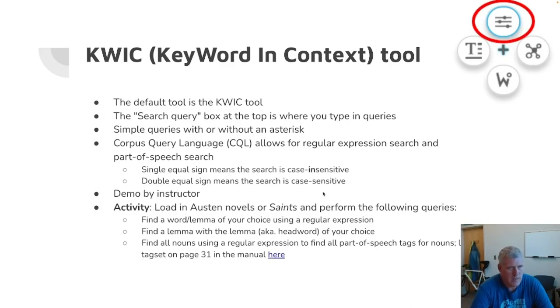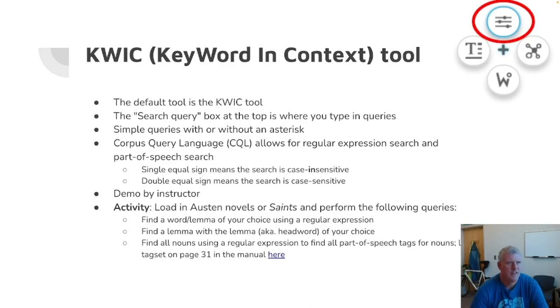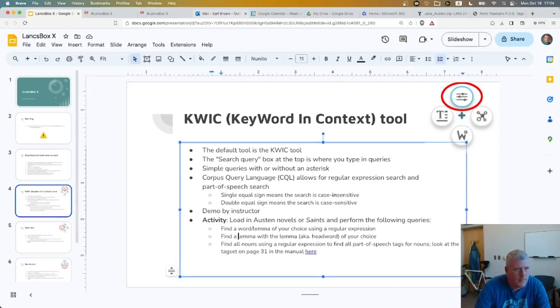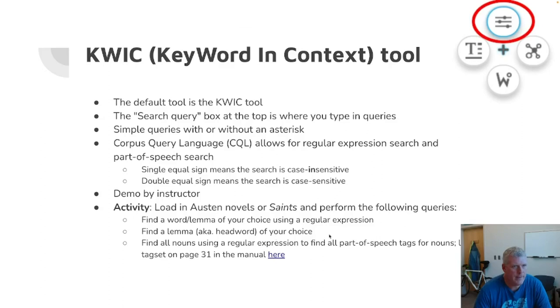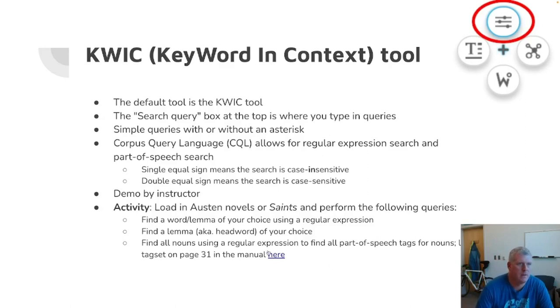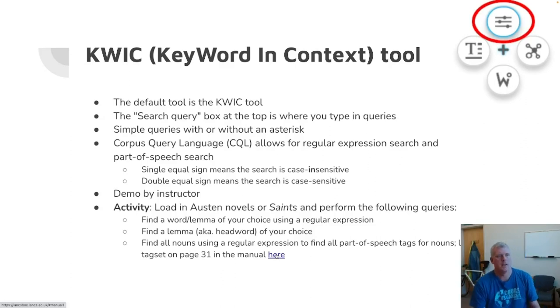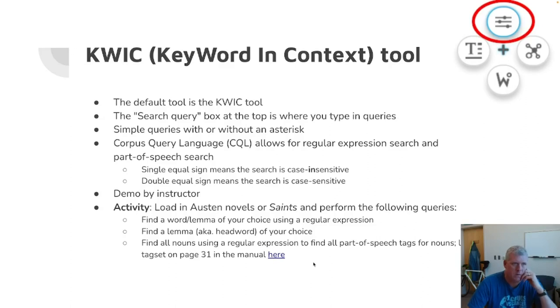Now I think you are ready to do this activity. Load up Austin novels or the Saints three volumes and perform the following queries. First, find a word or lemma of your choice using a regular expression. Second, find a lemma — headword of your choice using HW. Third, find all nouns using a regular expression to find all parts of speech for nouns. I'm pretty sure they're using the Penn Treebank tag set. Go ahead and pause the video now and try these three activities with LancsBox X. Ready, set, pause.